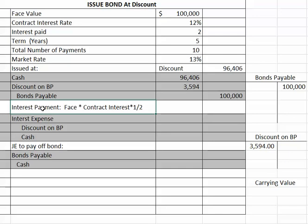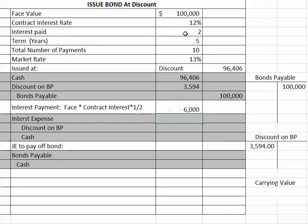The next thing you're going to do is calculate the interest payment — it's very important that you know how to do this. The formula is the face amount times 12%, so $100,000 times 0.12, divided by 2, because interest is paid semi-annually, meaning twice a year. So every six months, you're going to write a check for $6,000 to the bondholder.